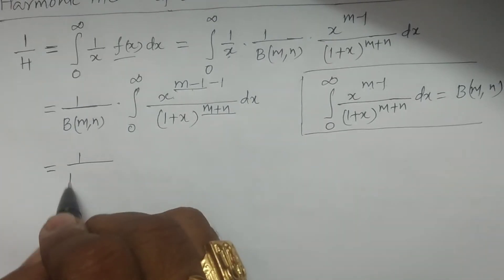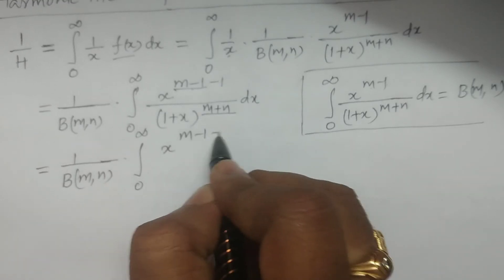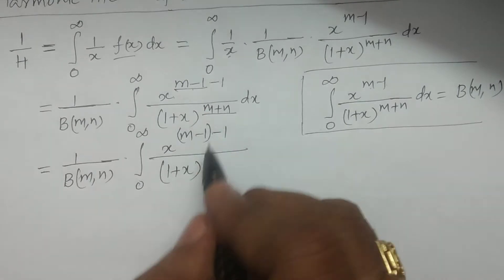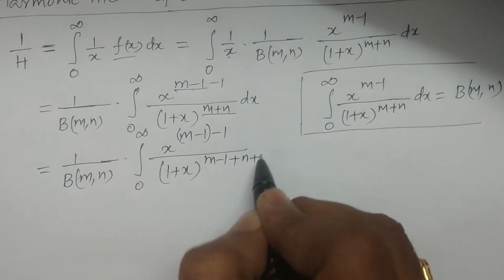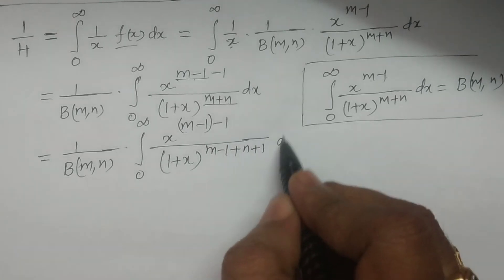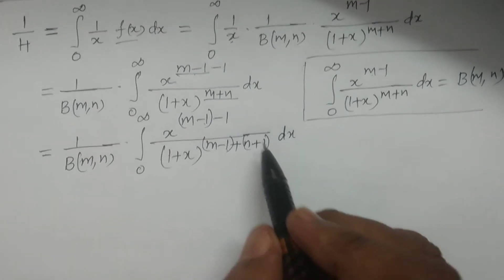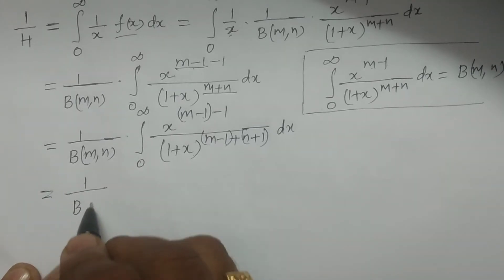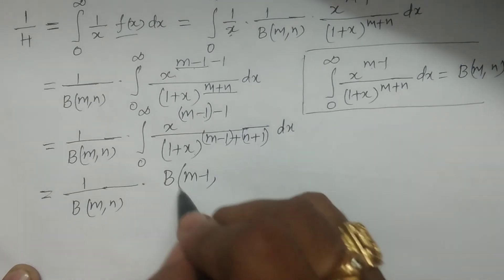Converting, we have 1 by beta(m, n) into integral from 0 to infinity of x power m minus 1 minus 1 divided by 1 plus x whole power. By adding and subtracting 1, the exponent becomes m minus 1 plus n plus 1 dx. So the two parameters are m minus 1 and n plus 1. This integrand becomes beta(m minus 1, n plus 1), giving 1 by beta(m, n) multiplied by beta(m minus 1, n plus 1).